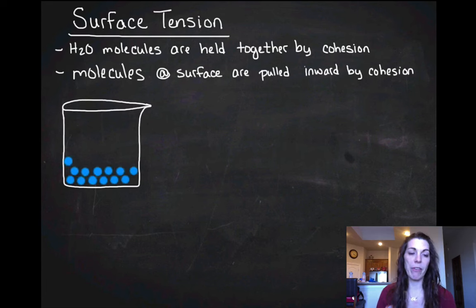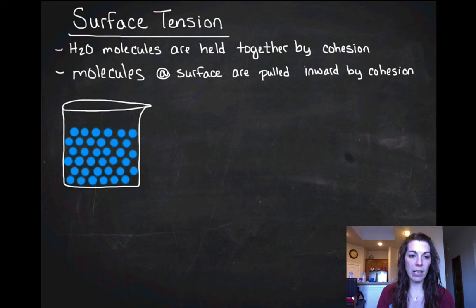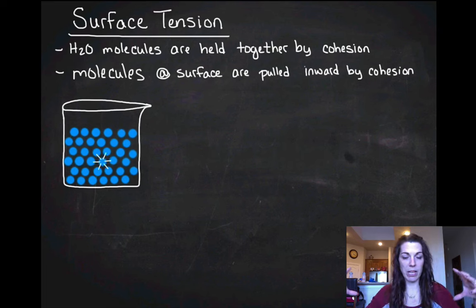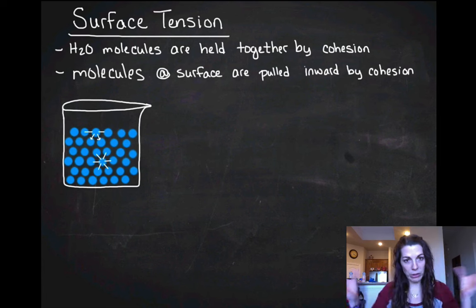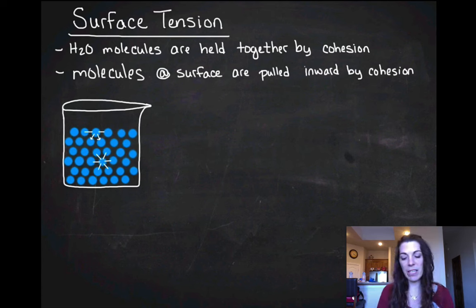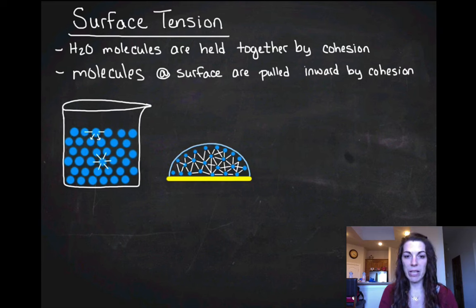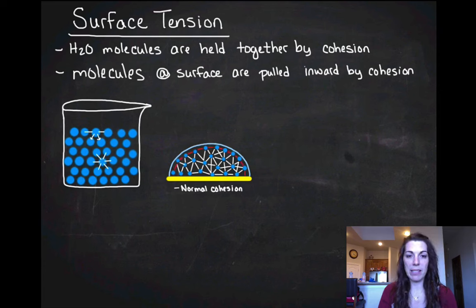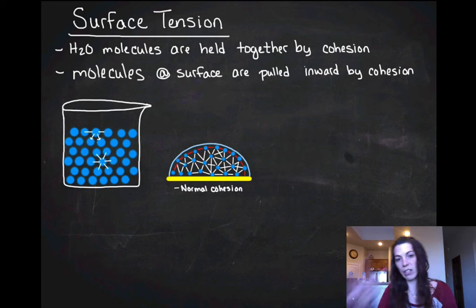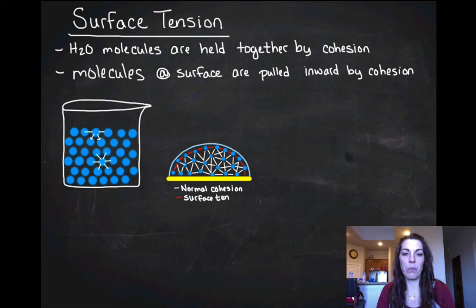Looking at a beaker filled with water molecules: in the center, the white lines indicating hydrogen bonds pull everything together in all directions. But a water molecule at the surface is only being pulled sideways and downward — nothing is pulling it up. So it forms a kind of skin on top. You can see this in real life: put water on a desk and it forms a little bubble. Those surface hydrogen bonds create the surface tension.